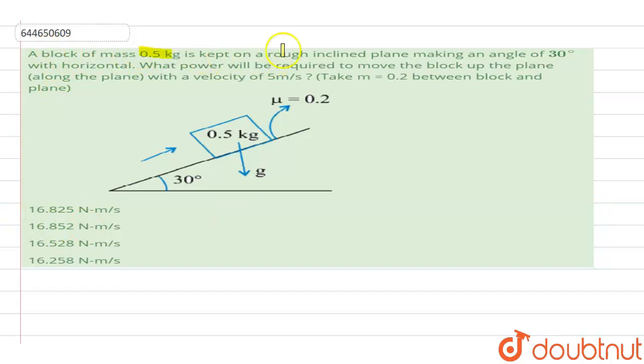A block of mass 0.5 kg is kept on a rough inclined plane making an angle of 30 degrees with horizontal. What power will be required to move the block up the plane along the plane with a velocity of 5 meters per second?